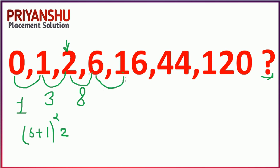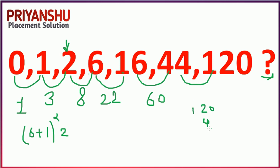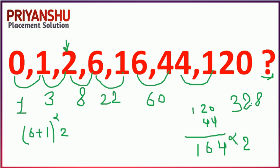Continuing: 6+16=22, ×2=44; then 16+44=60, ×2=120. Now 120+44=164, and 164×2=328. So the next number is 328.